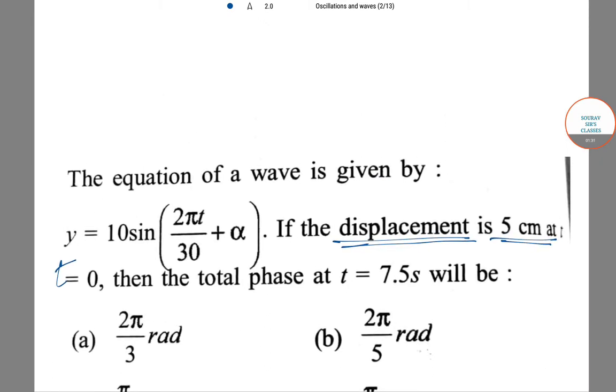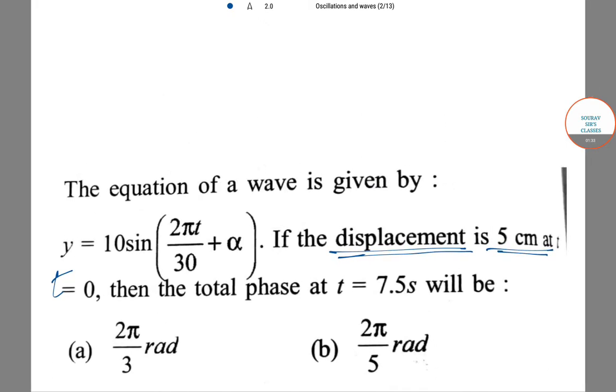Here t = 0 and y = 5 are given. We can substitute into the equation: 5 = 10 sin(α), so α = π/6. Now for total phase at t = 7.5 seconds...